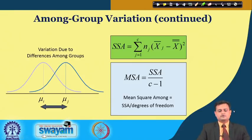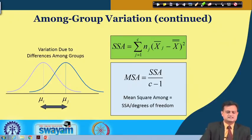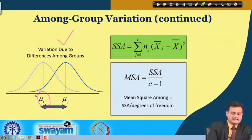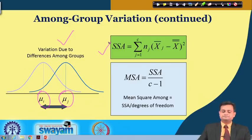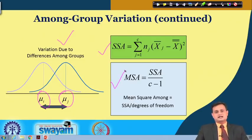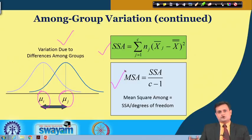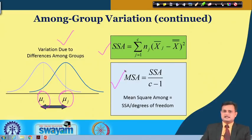From SSA we can derive another term: MSA — mean square among group, representing variation due to differences among groups. MSA = SSA / (C - 1), which follows the general rule: mean square = sum of squares divided by degree of freedom.